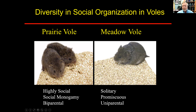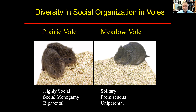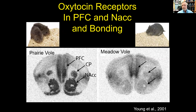Meadow vole mothers take care of their babies by themselves and then abandon them after about two weeks. There's something fundamentally different about their social brain. You might think prairie voles simply have more oxytocin, but that's not the case — if you stain the brain for oxytocin fibers or cells, you don't see differences in the peptide. But if you stain for the receptors, you see really dramatic differences.